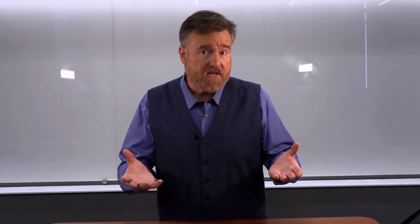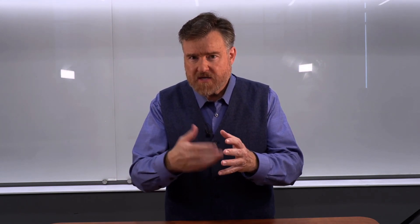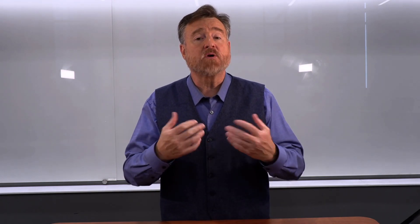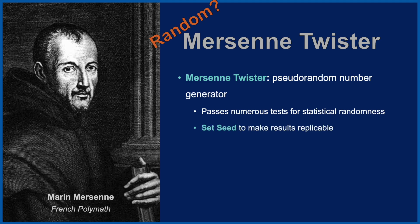Excel is not the only software we could use to create random numbers, but regardless of what software you use, chances are the math going on underneath that random number generator is called a Mersenne Twister. The Mersenne Twister is a pseudo-random number generator, meaning that it looks random and passes numerous tests for statistical randomness. However, the Mersenne Twister also has the ability to set a seed, meaning that we can establish what the starting value is. The set of random numbers generated will therefore be the same for everyone using that same starting value.